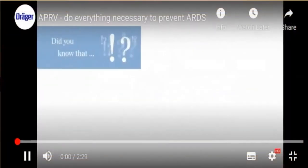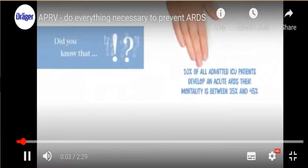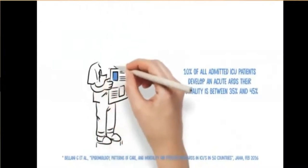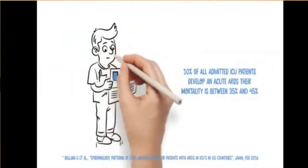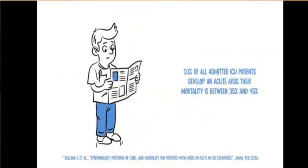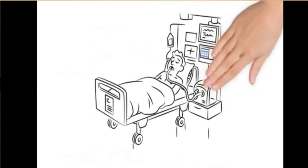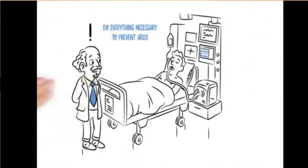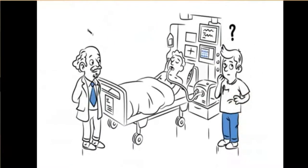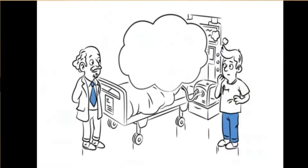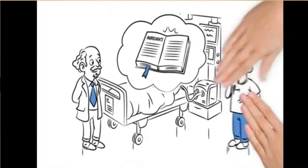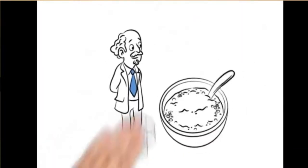If you consider that 10% of all admitted ICU patients develop acute respiratory distress syndrome, ARDS, and their mortality is between 35 and 45% depending on severity, then we should be very concerned. This shows that everything necessary to prevent ARDS should be done. Since it is difficult to reduce the mortality of established ARDS, it is important to shift from treatment to prevention. Wouldn't it be good if there were something like a recipe that counteracts the development of ARDS?